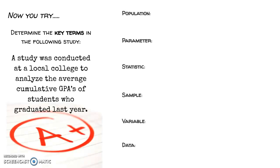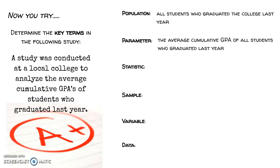So let's put all this information together. Determine the key terms in the following study. A study was conducted at a local college to analyze the average cumulative GPAs of students who graduated from that college just last year. So we're looking at the GPAs of students who graduated last year. Who is the population? The population we're studying is all the students who graduated from that college last year. What is the parameter we want to know about that population? It is the average cumulative GPA of all students who graduated last year. So we're looking at the average GPA here. That is our parameter for all the students.